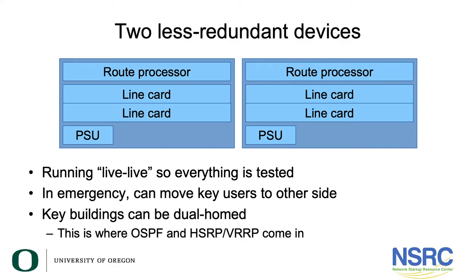It's quite often a lot better to buy two less-redundant devices — a core router with its own route processor, sufficient line cards for the distribution switches connecting to it, and a single power supply. Most devices these days end up with dual power supplies anyway. Running both devices at 50% capacity means that if one fails, you simply move the connections from the failed device onto the other router. In an emergency you can move key users over to the other side, or if you have sufficient capacity, move all of them. Key buildings could be dual-homed, and this is where OSPF, HSRP, and VRRP come in.